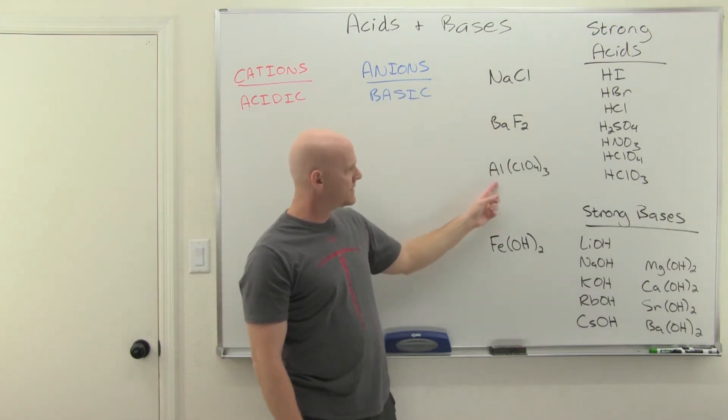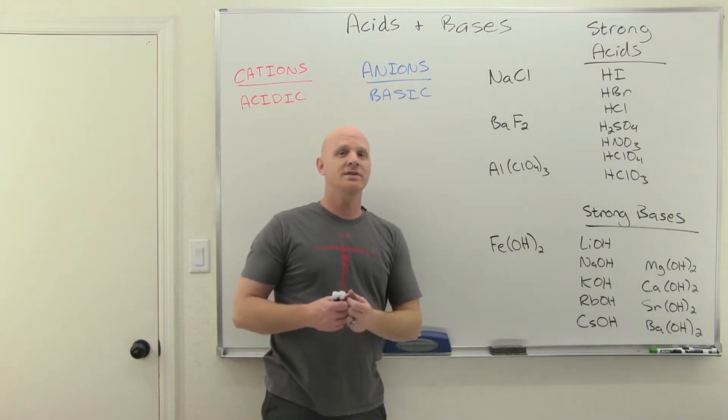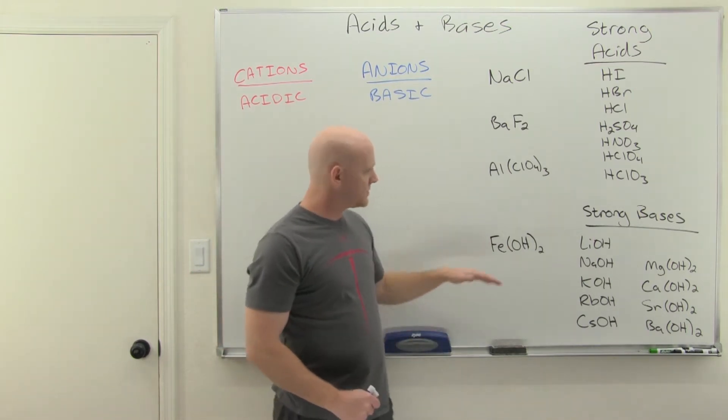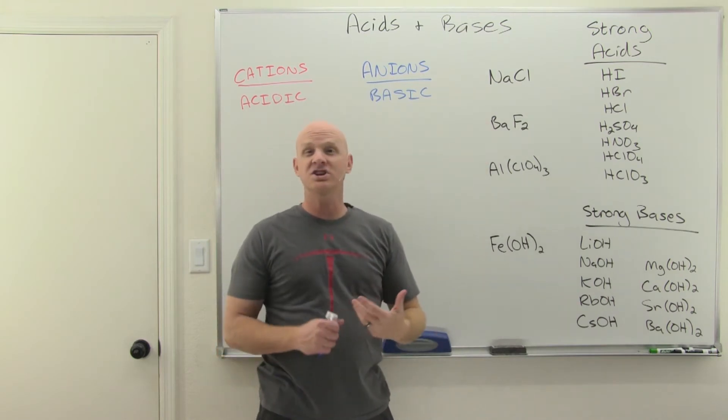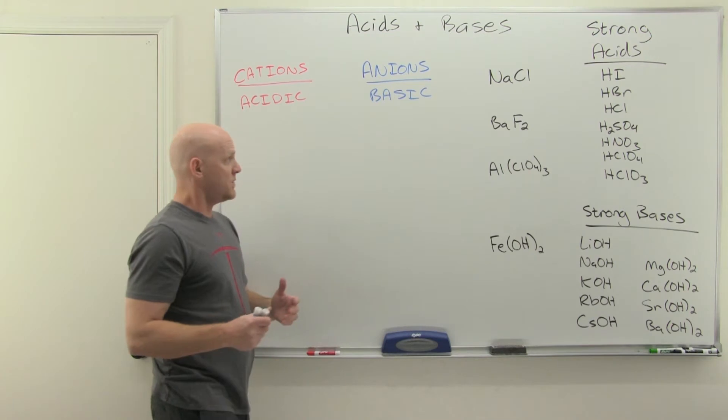Metal and non-metal, or metal and polyatomic ion, these are all examples of salts. And it turns out salts can either be acidic, or basic, or neutral. You have to be able to look at a formula and identify which it is based on what we're going to learn in this lesson.